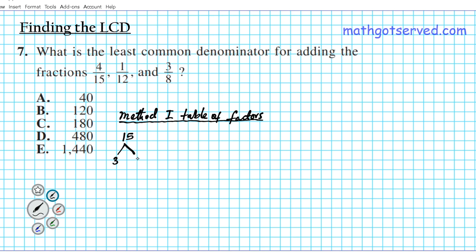Three goes into 15 five times. Then for 12, two goes into 12 six times, and then two goes into six three times. And then eight can be decomposed — it is even — so two goes into eight four times and two goes into four two times. So we can write eight as two times two times two, we can write 12 as two times two times three, and we can write 15 as three times five.